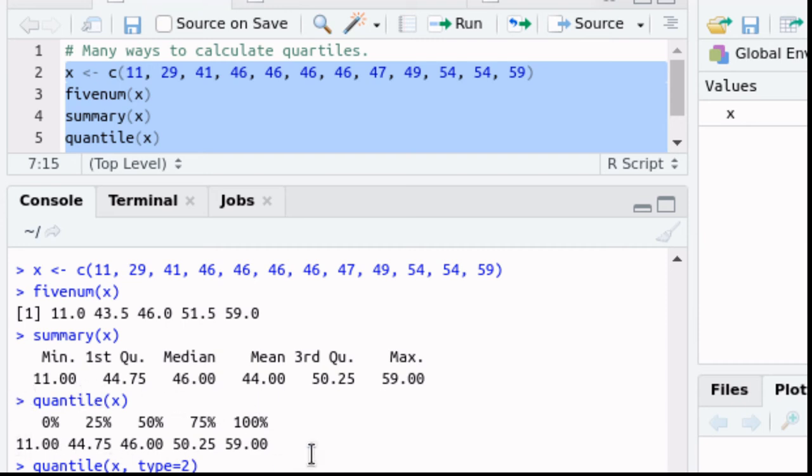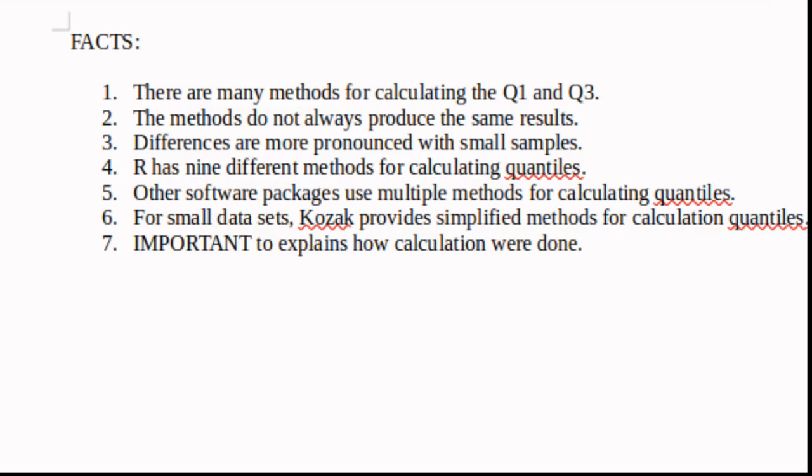Notice that in this case quantile is agreeing with summary but it's not agreeing with the five number summary. If you do quantile with type 2 which seems to be the type that agrees with mom most often, then you'll notice that quantile with type 2 agrees with the five number summary. Those are the two that will give you the best answers as far as mom is concerned.